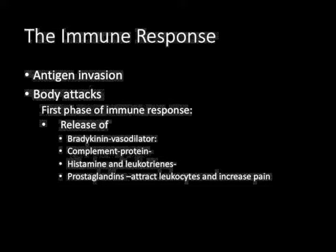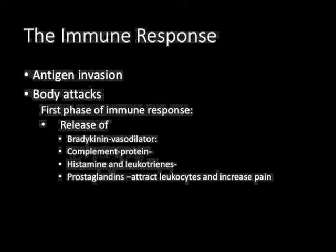There are three chemicals released by the mast cells. There's histamine and leukotrienes, which cause the vessels to dilate and cause itching. And then there are prostaglandins, whose increase makes the capillaries more permeable. They also increase pain and attract leukocytes, which are white blood cells, to the site of infection.